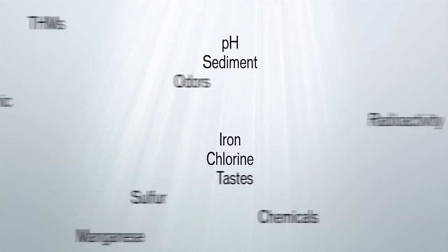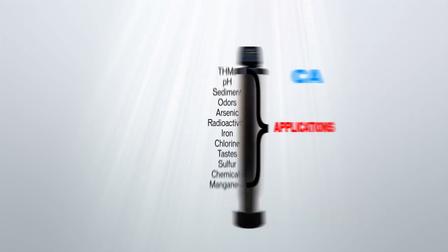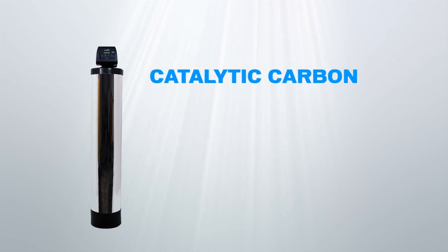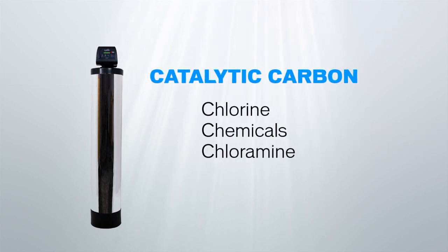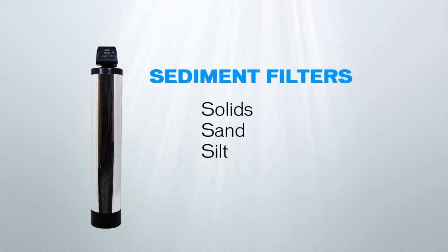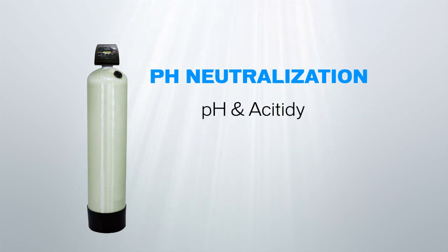At U.S. Water, we have backwashing filters for many different applications. We have carbon filters that remove chlorine and chemicals, catalytic carbon filters that remove chlorine, chemicals, and chloramines, backwashing sediment filters to remove solids, sand, and silt, and pH neutralization filters to raise the pH of the water from acidic to neutral.